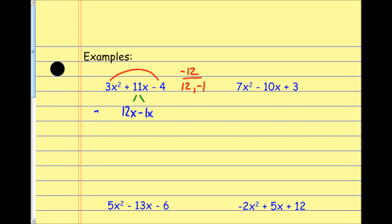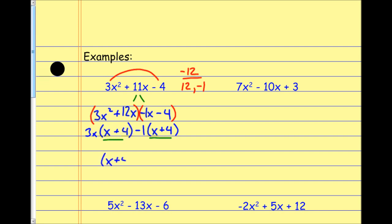Everything else tags along for the ride. Now instead of three terms I have four terms, which allows me to put them in groups of two — factoring by grouping. I include the sign in front of that negative 1. Out of the first group I can factor out a 3x, leaving me with x plus 4. Out of the second group, since I see that negative in front of the first term, I factor out negative 1, which leaves me with positive x and positive 4. I see the common polynomial x plus 4, so my two factors are x plus 4 and 3x minus 1.